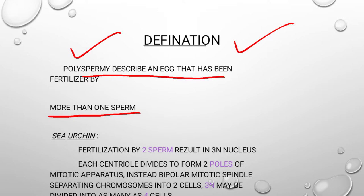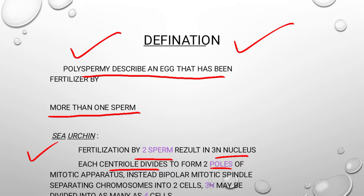In sea urchin, fertilization by two sperms results in three end nuclei. Normally, one sperm and one egg produce two end nuclei — one from the sperm and one from the egg. When two sperms fertilize one egg, three end nuclei form, centroles divide and move toward two poles, and division starts. After monospermy, completion of meiosis and next fertilization occurs.